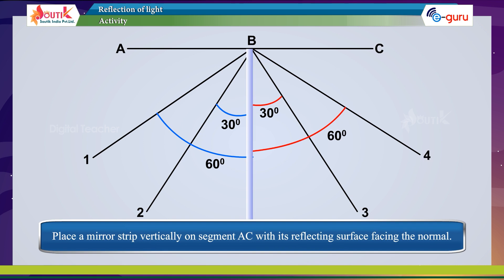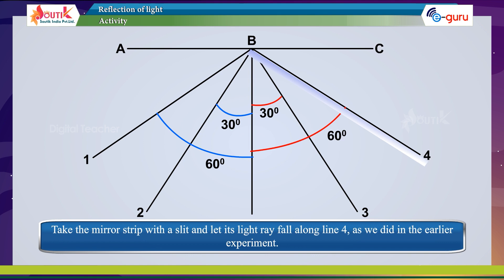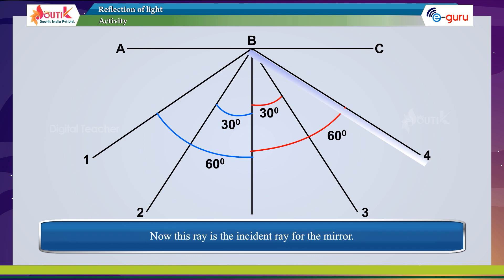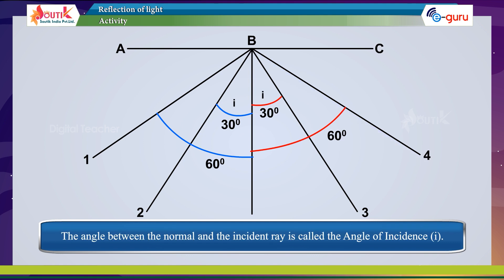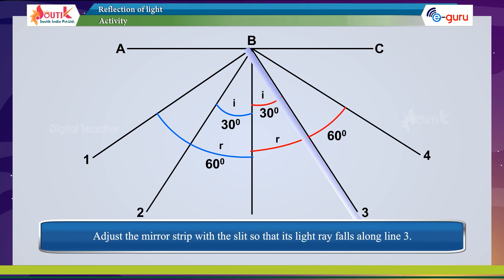Place a mirror strip vertically on segment AC with its reflecting surface facing the normal, so that the back of the mirror coincides with segment AC. Take the mirror strip with a slit and let its light ray fall along line 4. This ray is the incident ray for the mirror. The angle between the normal and the incident ray is called the angle of incidence, I. The angle between the normal and the reflected ray is called the angle of reflection, R. Adjust the mirror strip with a slit so that its light ray falls along line 3, and observe on which line the reflected ray falls.